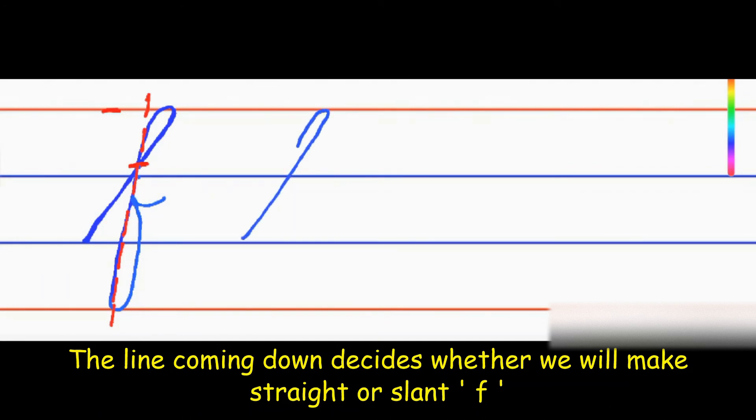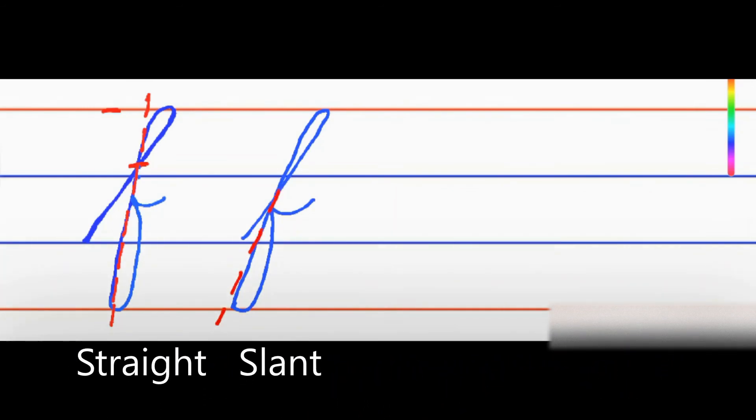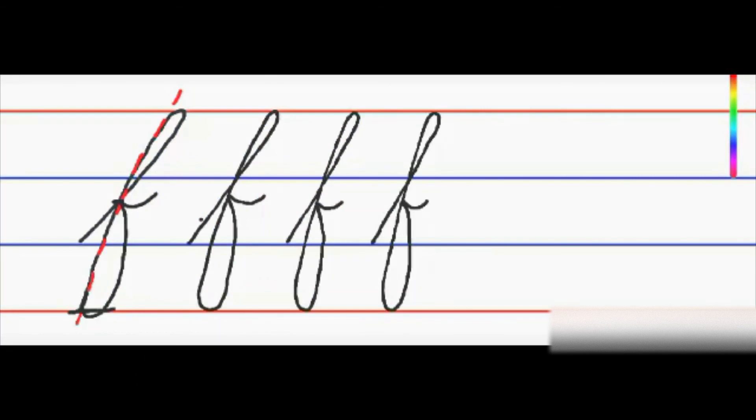Let me show you the difference. In slant cursive we are coming down slant and then making a turn and coming up and pulling out a tail. In this case it's clearly visible this is coming down slant, so this will help you differentiate between straight and slant f. Good luck, I'm sure you'll be able to make a perfect f.